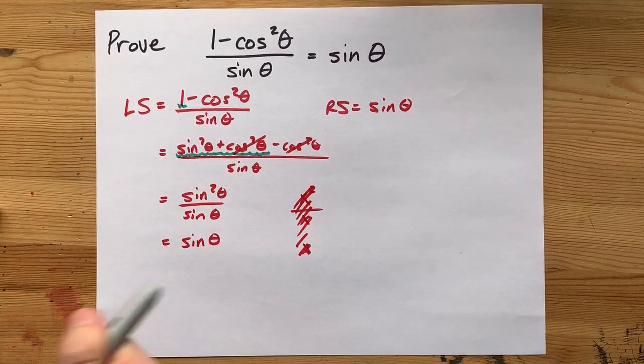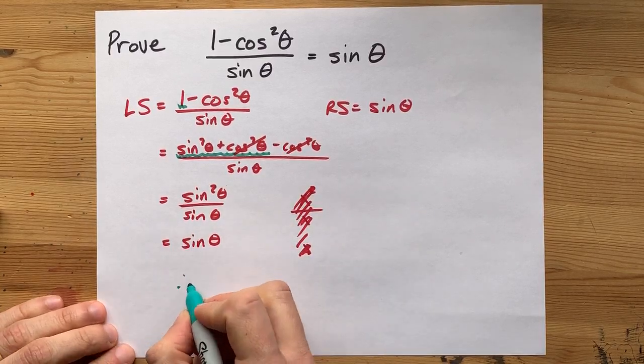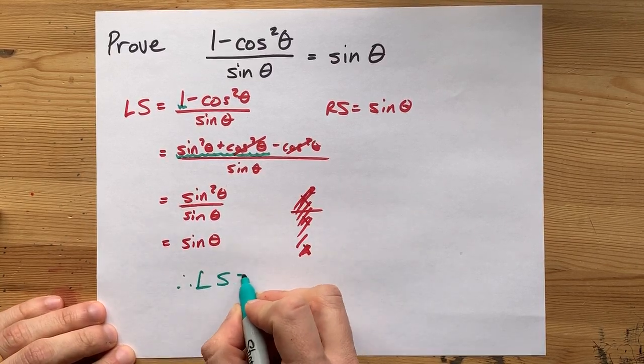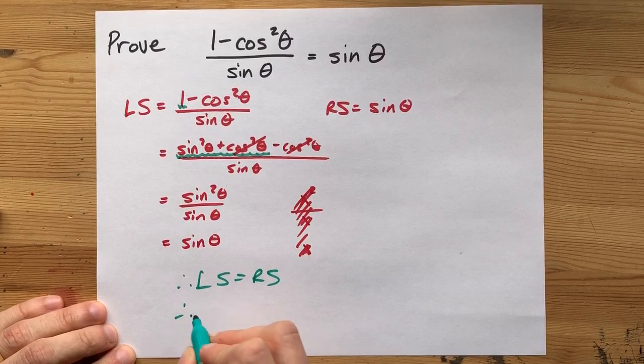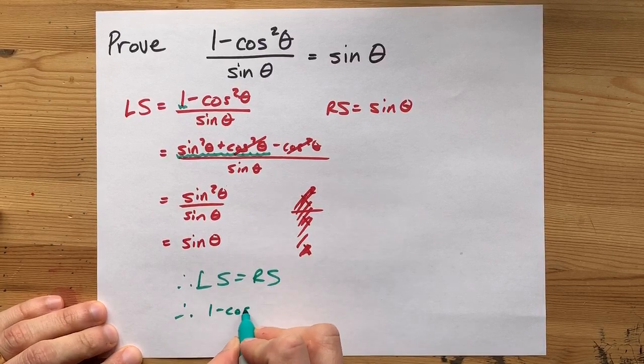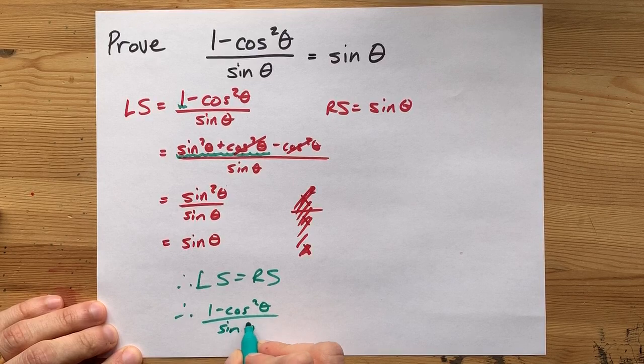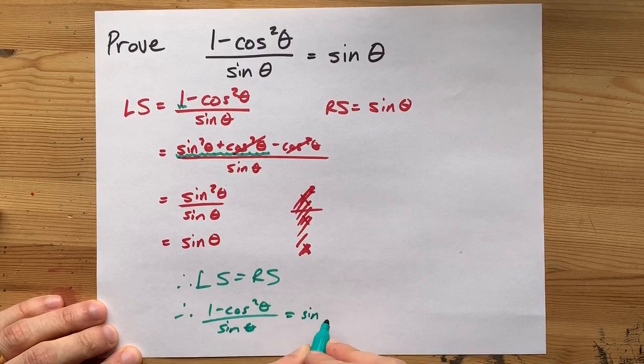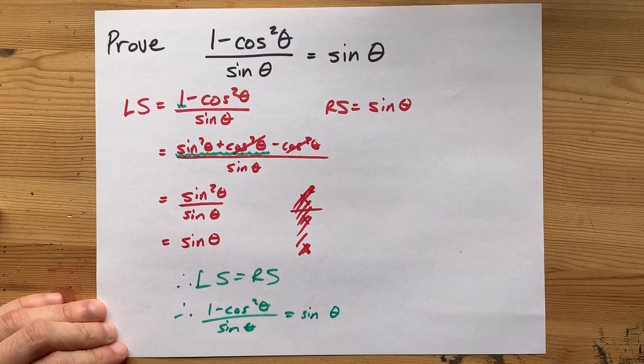Ah, my left side and my right side already equal each other. Better celebrate by stating left side equals right side, and therefore, 1 minus cos squared of an angle divided by the sine of the angle equals that same sine of the angle.